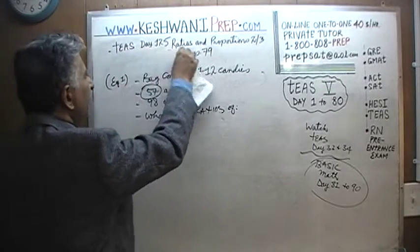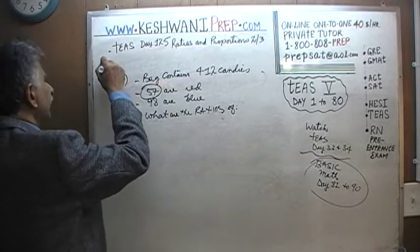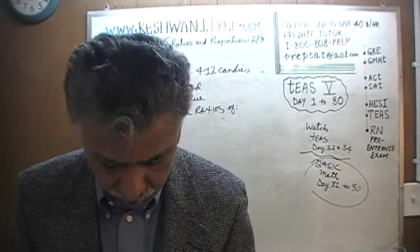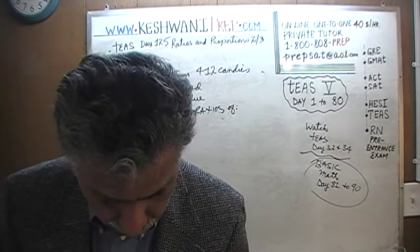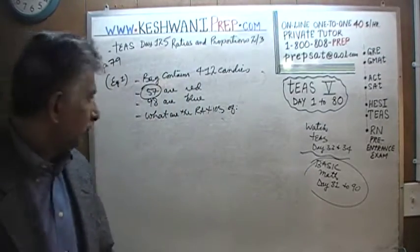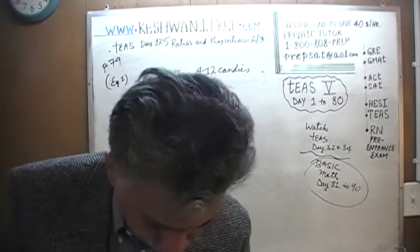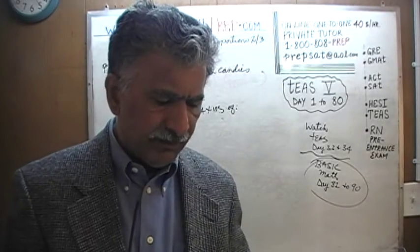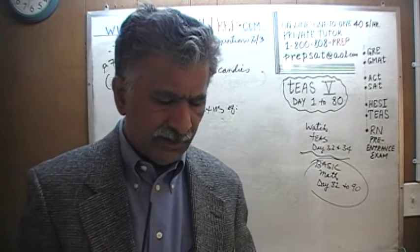We are going to do problems on page 79. These are not practice problems — they are at the very top of page 79. Turn to page 79 in your book and look at the very top where it talks about Timmy, who only likes blue and red candies. It says Timmy only likes blue and red candies; in his bag containing 412 candies, he counts 57 red candies and 98 blue candies.